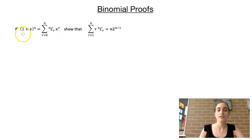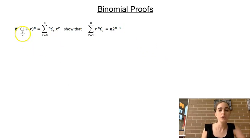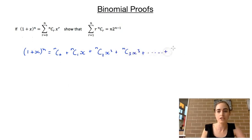Our third example states that if (1 + x) to the power of n equals this expression, we want to show that the sum from r = 1 to n of r·nCr equals n times 2 to the power of n minus 1. I'm going to start with (1 + x)^n and write it in the longer form: nC0 + nC1·x + nC2·x² + nC3·x³ and so on, all the way to nCn·x^n.